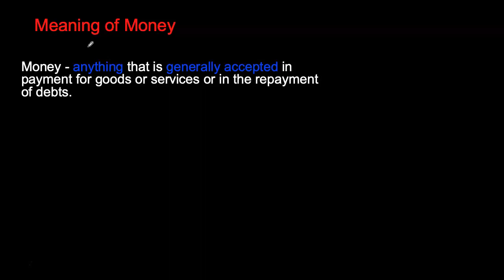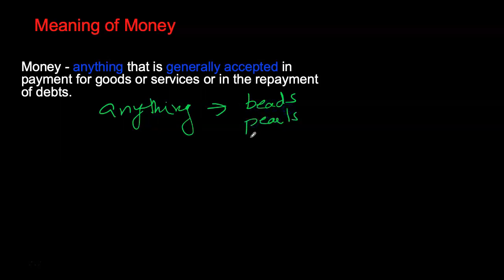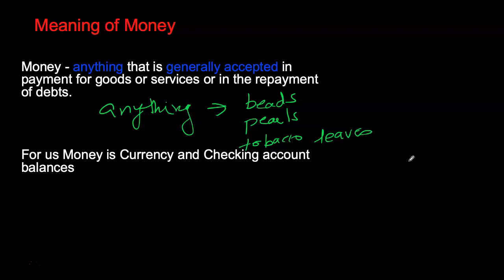Let's go over the formal definition of money. Money is anything that is generally accepted in payment for goods and services. Note the key phrase: anything that is generally accepted. Historically, money has been in the form of beads, pearls, tobacco leaves, and many other commodities. So money is anything generally accepted as a form of payment for goods and services or for repayment of debt.